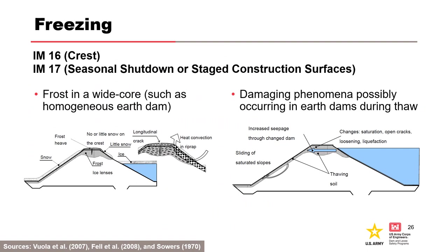IM-16 and IM-17 are for freezing effects. Frost effects include extra water drawn into the soil by capillary action, causing pumping and ice lenses, which can lead to heave and cracking or a high permeability layer. This may occur on seasonal shutdown or staged construction surfaces and adjacent to conduits due to freezing and differential movements. Core materials most susceptible include silts, clayey silts, silty sands, silty gravels, and clayey sands and gravels with a plasticity index less than 12.